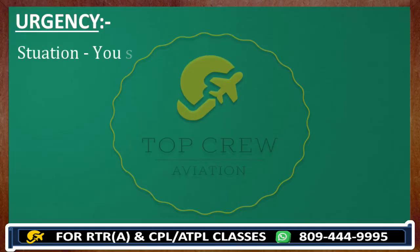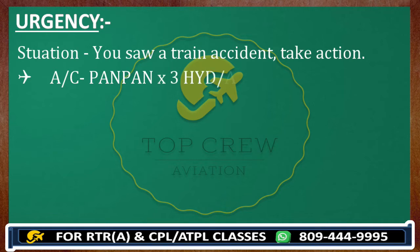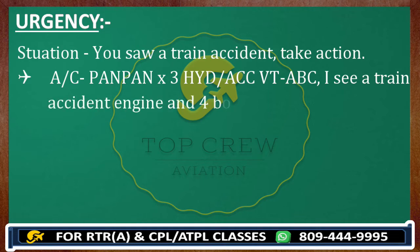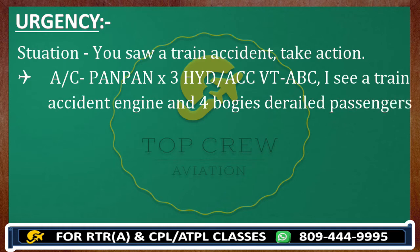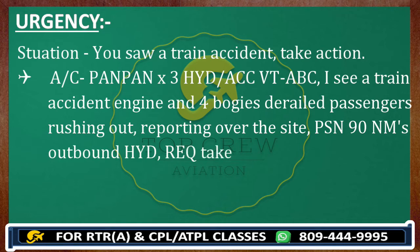In case of a train accident: Pan Pan Pan Pan Pan Pan, Hyderabad Control, this is Victor Tango Bravo Charlie, I see a train accident — engine and 4 bogeys derailed, passengers rushing out. Position 70 nautical miles outbound Hyderabad, request take action, or we can say inform to the concerned authority. This is how we make a Pan Pan call.